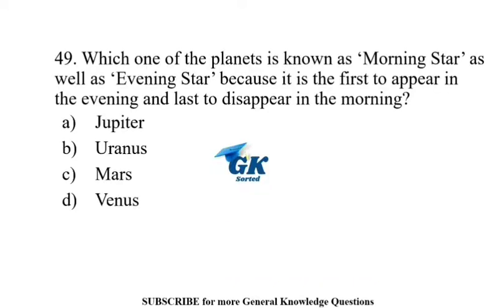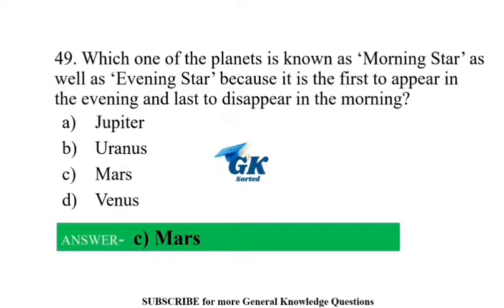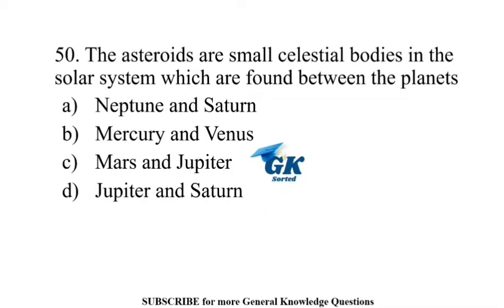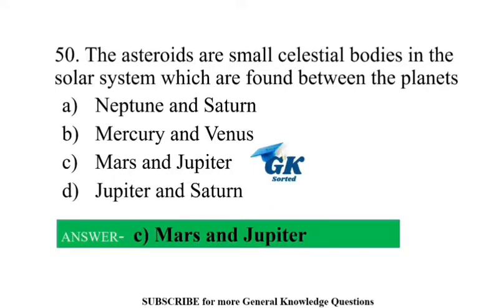Which one of the planets is known as morning star as well as evening star, because it is the first to appear in the evening and the last to disappear in the morning? Mars. The asteroids are small celestial bodies in the solar system which are found between the planets Mars and Jupiter.